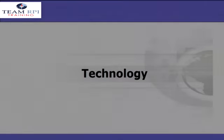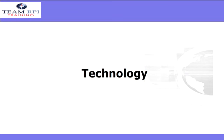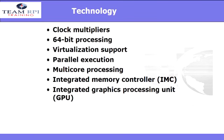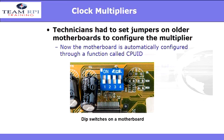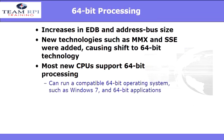So what's inside all of this? It's back to the basics — from clock multipliers and 64-bit processing all the way to virtualization and integrated memory controllers. All the modern CPUs run at some multiple of the system clock speed. In earlier computers, the CPU ran at the same speed as the motherboard; technicians had to set jumpers on older motherboards to configure the multiplier. However, now the motherboard is automatically configured through the CPU ID.